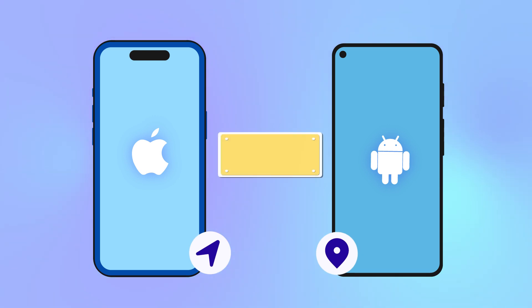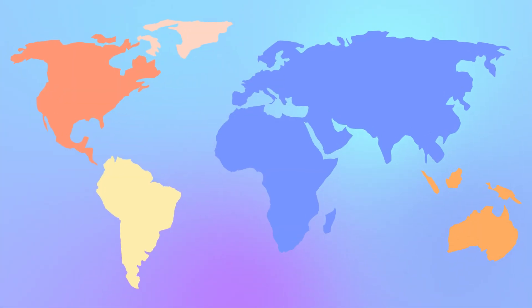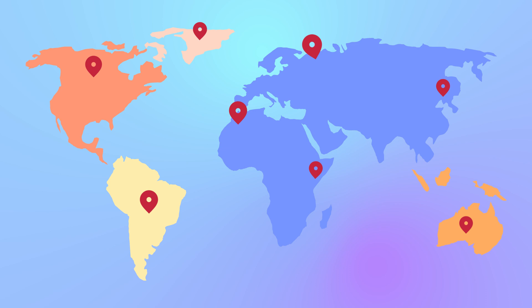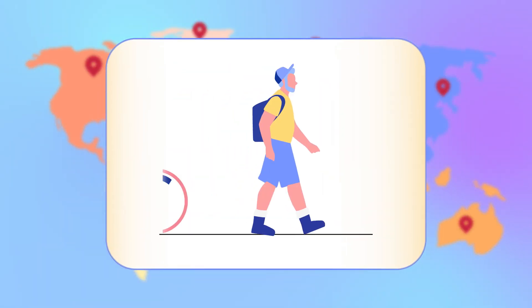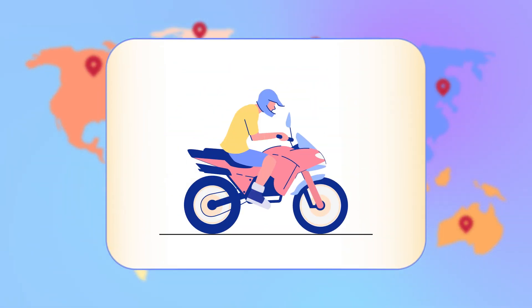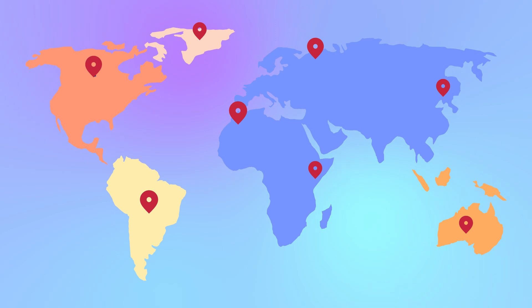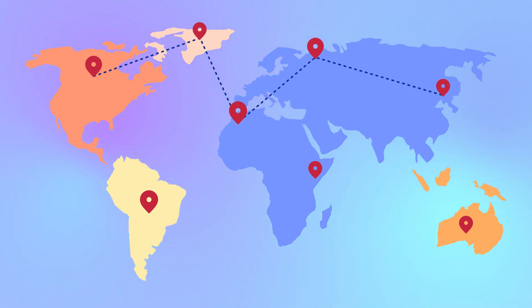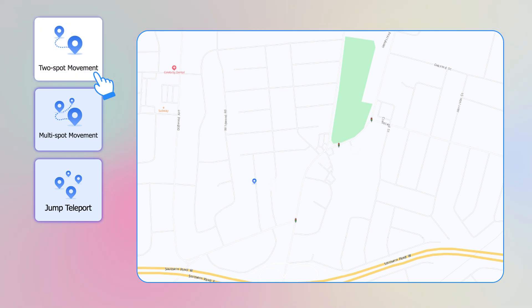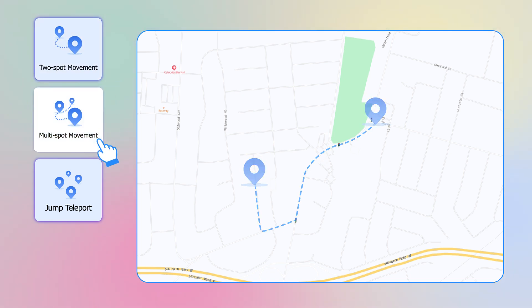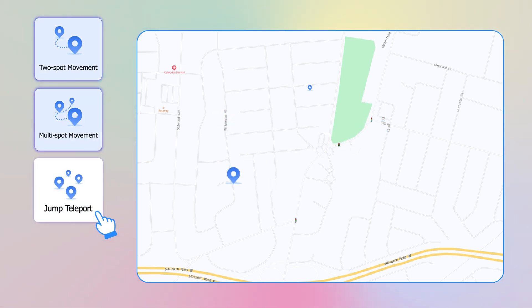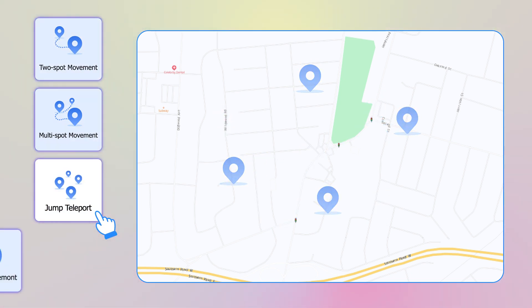It supports changing the location on any model of iOS and Android devices. It can change the location of your phone to any place in the world. It can set the speed of walking, bicycling, motorcycling, and driving, and simulate GPS movement according to your customized route.